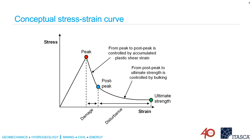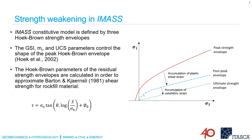From that discussion, we can put this conceptual stress-strain curve together that's implemented in IMAS: the rock mass deforms up to its peak strength, then we introduce damage and it moves from peak to post-peak strength as it accumulates plastic shear strain. Then we disturb the rock mass between post-peak strength and ultimate strength as we introduce porosity or bulking. If we put that stress-strain curve back into the principal stress plot, we get back to these three strength envelopes, showing how different parts of softening are controlled either by plastic shear strain initially and then by accumulation of volumetric strain increment.